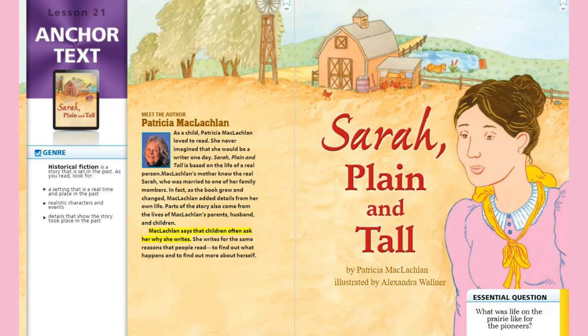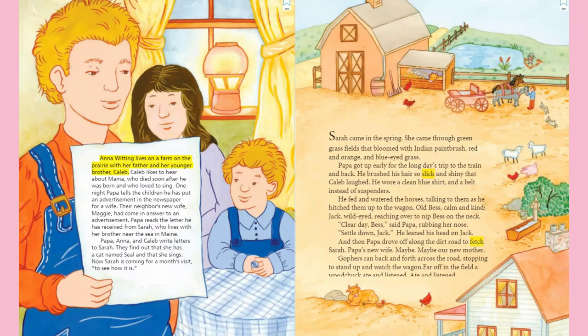Parts of the story also come from the lives of McLaughlin's parents, husband, and children. McLaughlin says that children often ask her why she writes. She writes for the same reasons that people read — to find out what happens and to find out more about herself. As we read, let's think about our essential question: What was life on the prairie like for the pioneers?